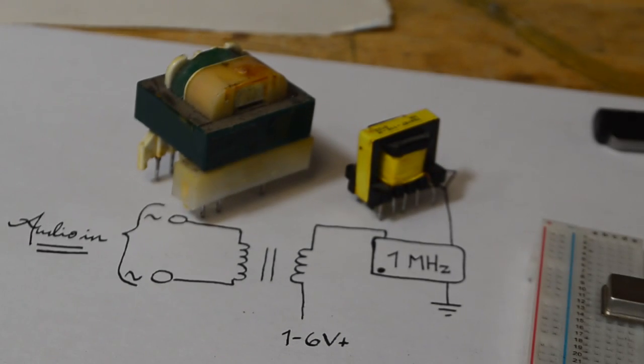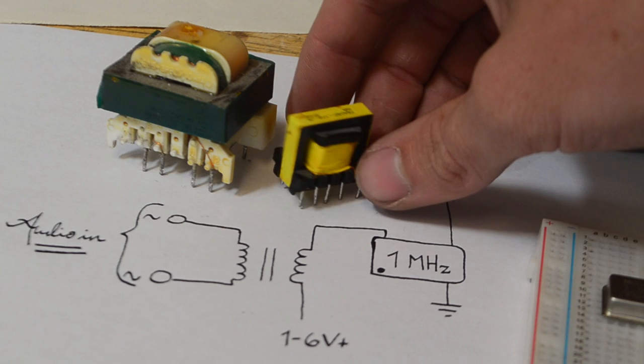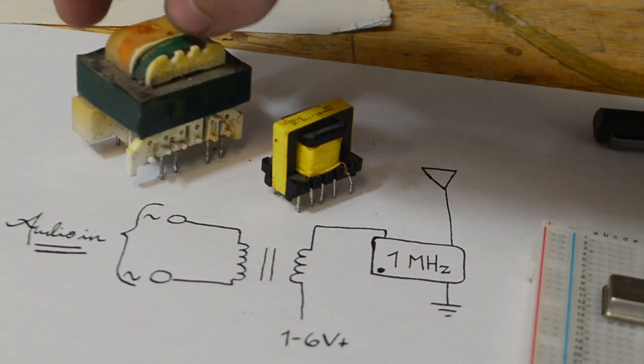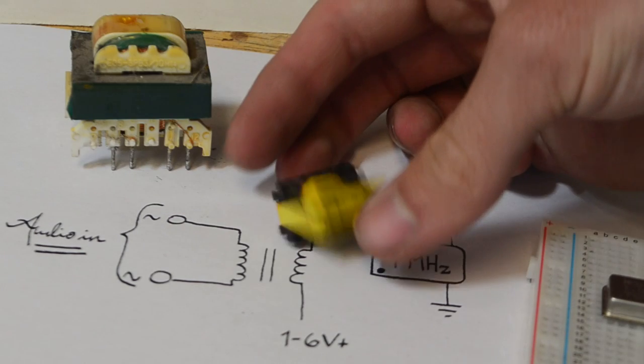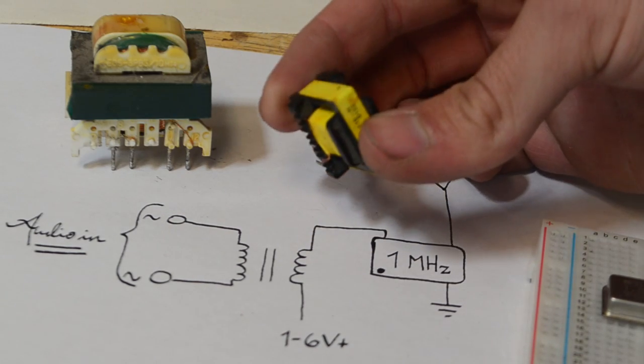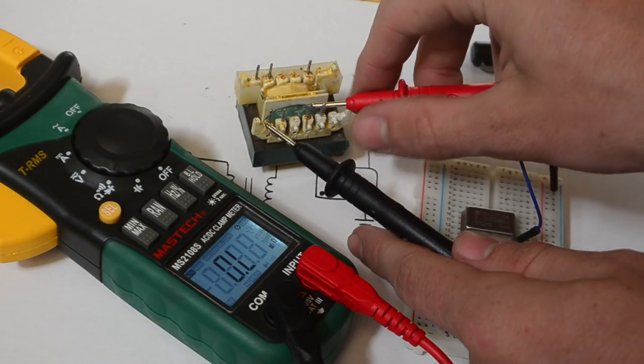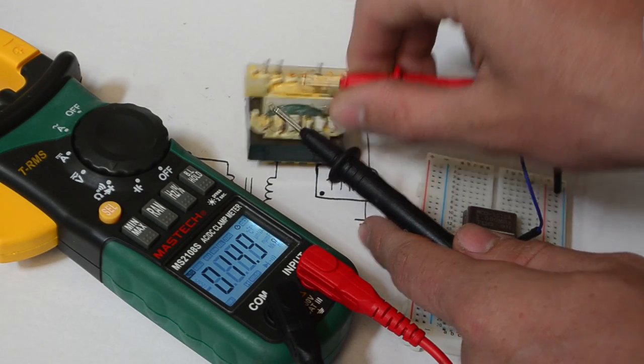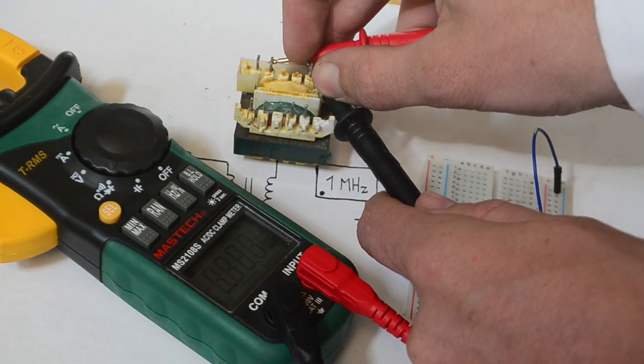The next component we need is the transformer to modulate the signal. Here I have two different transformers that I've used. For me this larger one which came out of the control panel on a microwave oven seems to work better. However a small one like this which I'm pretty sure came out of an old TV board also works. As you can see using the multimeter we can see the different connection points. This side over here has 14.9 ohms, while this side over here is 520.